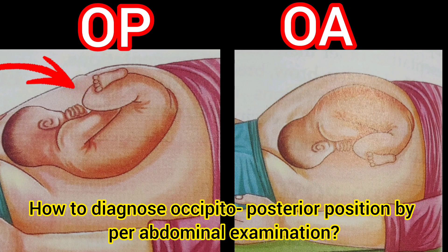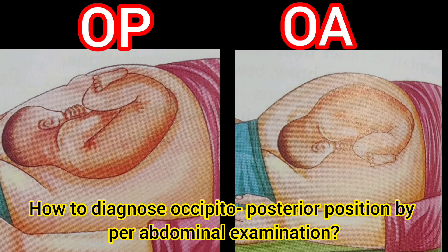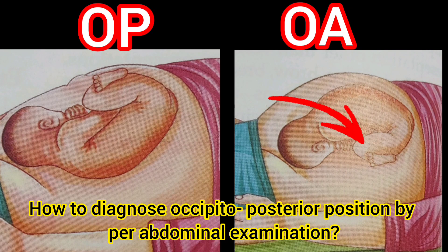In Occipitoposterior position, fetal limbs are felt near the umbilicus, whereas in Occipitoanterior position, fetal limbs are felt more towards the back.